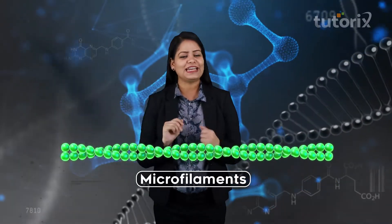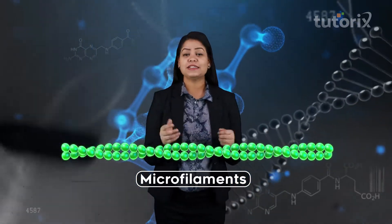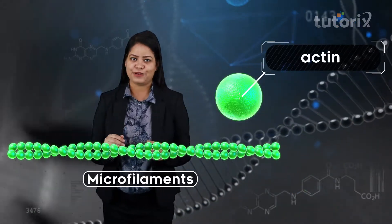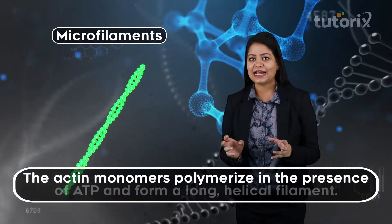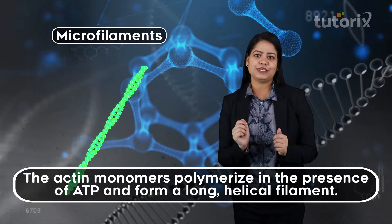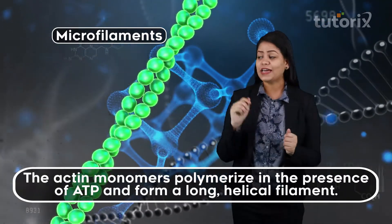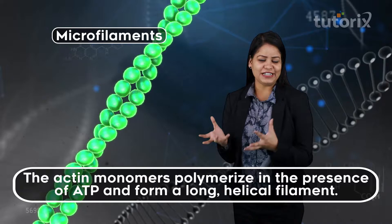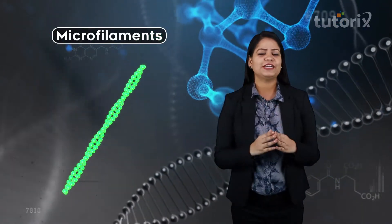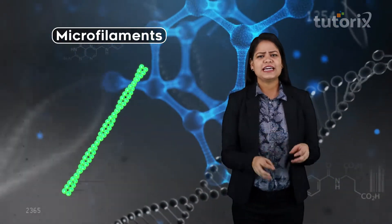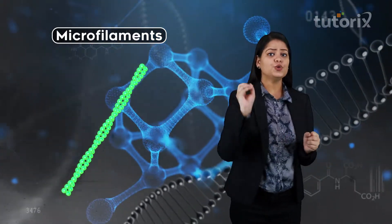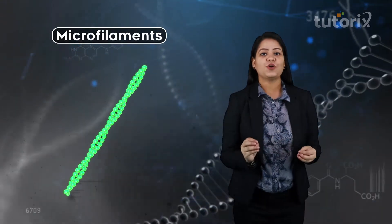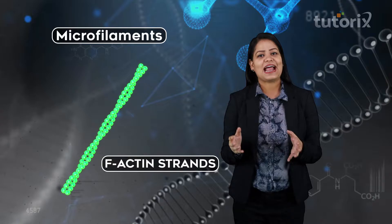The microfilaments exhibit a periodic beaded arrangement inside a cell due to the helical arrangement of their monomers — the protein actin. These actin monomers polymerize in the presence of ATP to form a long helical structure, which is why it appears as a periodic beaded arrangement. A microfilament is a double-stranded structure with two helical grooves running along its length; these strands are also called F-actin or actin strands.